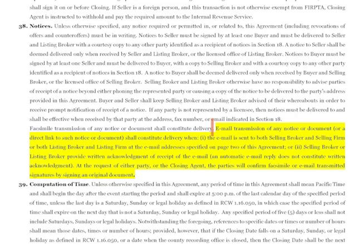Section 38 on notices has been updated to the 21st century. We now expressly allow email transmission of notices, which is part of why email addresses on page two are so important. Delivery of notice is effective when the broker emails a copy to both the selling broker and the selling firm. We also carved out an exception: if the receiving broker confirms back that they received a copy, that confirmation is itself sufficient and prevents a later dispute about whether notice was effective.